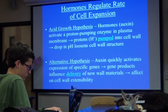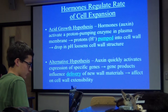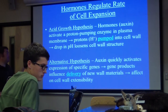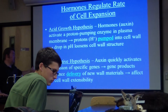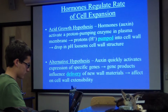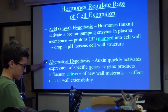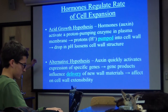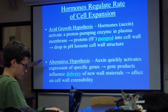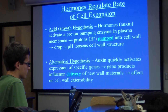Auxin quickly activates the expression of specific genes — so that fits with what we know about hormones behaving like transcription factors. Then it's the gene products, the products of that activated gene, that influence the delivery of new cell wall materials, which then affect cell wall extensibility. So in this second hypothesis, hormones are having a more indirect effect. In the acid growth hypothesis, the hormones are having a pretty direct effect on cell wall extensibility.